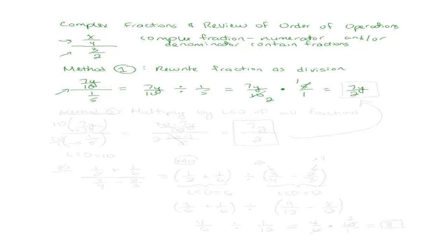So we call that method 1. Let's talk about method 2. Method 2, we are going to multiply by the LCD of all the fractions. So let's work with the same complex fraction, 7y over 10 all over 1 fifth. So the first thing I have to do is figure out what the LCD is for my top fraction and my bottom fraction. So what is the LCD between 10 and 5?